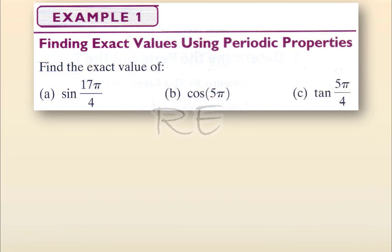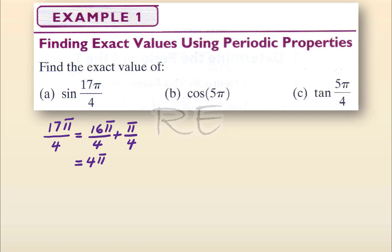We're going to find the exact value of sine of 17 pi over 4 using periodic properties. 17 pi over 4 is equal to 16 pi over 4 plus pi over 4, and 16 pi over 4 is 4 pi. 4 pi is 2 times 2 pi.